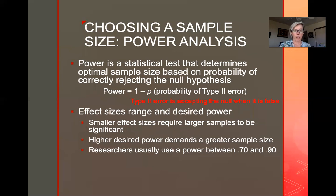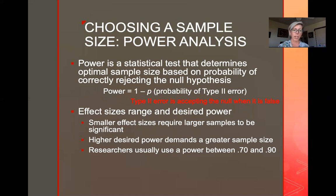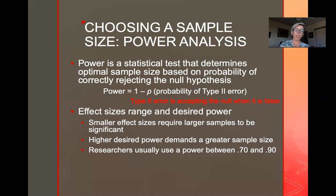There is a relationship between effect size and power. If you want to find a very small difference between two groups — such as the vocabulary difference between men and women — you have to have a lot more people, because the means are not very different from one another. If you're expecting a small effect size, you need a larger sample. If you're looking for a larger effect size — a big difference between the means — you need a smaller sample.